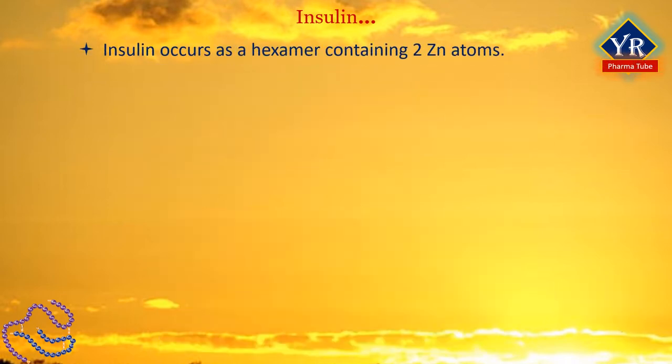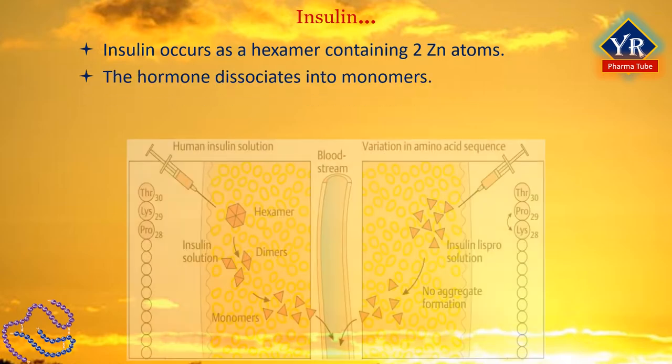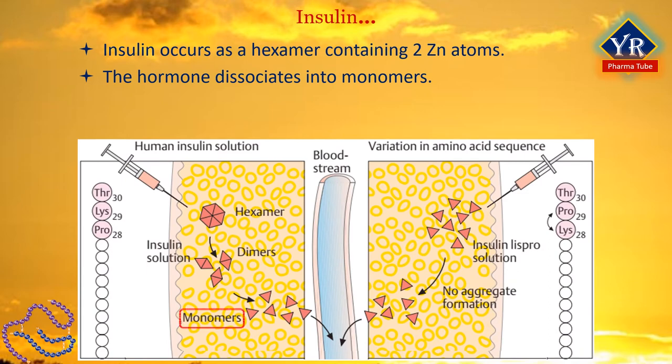X-ray diffraction studies have shown that insulin occurs as a hexamer containing two zinc atoms. The hormone dissociates into monomers, and the monomer is almost likely the biologically active form of insulin. The crystal structure also reveals that the two chains of the hormone form a highly ordered structure with several alpha helical regions in both chains. The carboxyl terminal portion of the B chain and the amino and carboxyl terminal residues of the A chain form the surface of the molecule which interacts with the receptor.